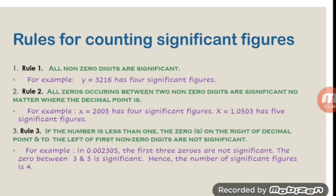Rule 2: all zeros occurring between two non-zero digits are significant, no matter where the decimal point is. For example, x = 2005 has four significant figures, because between the two non-zero digits 2 and 5, there are two zeros. According to the rule, these zeros are also included in the significant digits. Therefore, it has four significant digits. Similarly, another quantity x = 1.0503 has five significant figures.